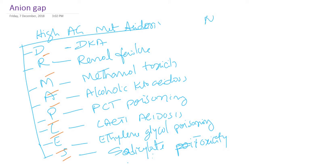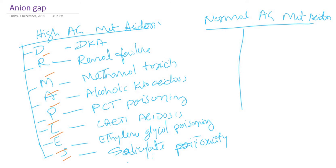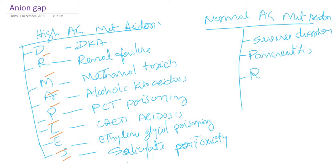For normal anion gap metabolic acidosis, causes include loss of bicarbonate through the lower intestinal tract — that is severe diarrhea — and even pancreatitis, because we know bicarbonate comes from the pancreas. Renal tubular acidosis is another cause — in renal tubular acidosis there will be a defect in secretion of hydrogen ions and a bicarbonate reabsorption defect. So this is about anion gap.